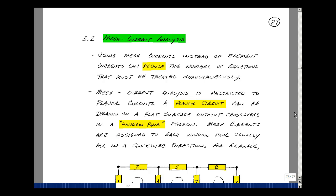This lesson deals with mesh current analysis. You can find these notes in the ECE 201 ebook in Chapter 3, starting on page 27. Using mesh currents instead of element currents can reduce the number of equations we have to solve simultaneously.